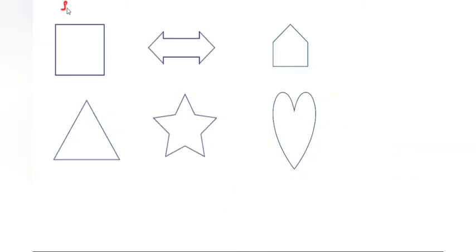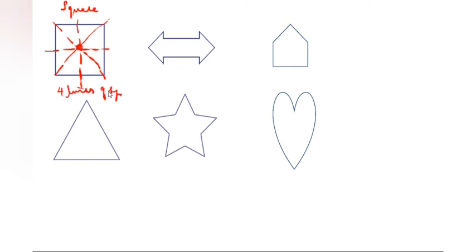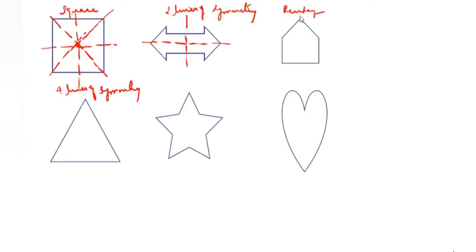This is a square. Square has how many lines of symmetry? 1, 2, 3, 4 — all come in one place. So, 4 lines of symmetry. This is an arrow — how many lines of symmetry? 1, 2 — 2 lines of symmetry. This is a pentagon — 1, 2, 3, 4, 5 — you see, 5 lines of symmetry.